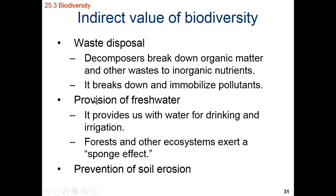We also have a provision of freshwater. As we have more biodiversity, we have more freshwater being provided for us. Many ecosystems have a sponge effect — when there's rainfall, if we have lots of biodiversity, that rainwater can be absorbed into organisms like a sponge and help alleviate variations in annual rainfall. We also have prevention of soil erosion: if we have root plant matter intact in the ground, it helps to hold the soil steady and prevent loss from wind or water erosion.